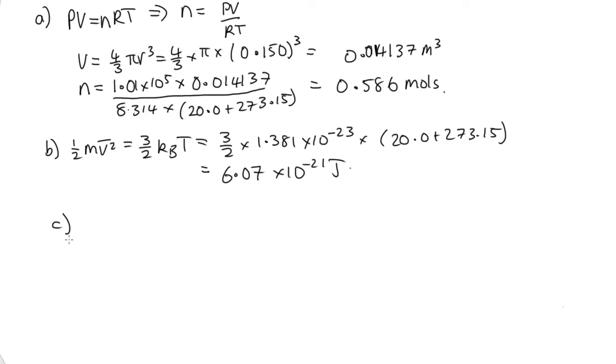Now part C asks, what's the RMS velocity of these helium atoms? So in order to do that, we need to use that v, the average velocity squared, is equal to the RMS speed squared. And so from up here, we can see that vRMS squared will be 3 over 2 kB T times 2 and divided by m.